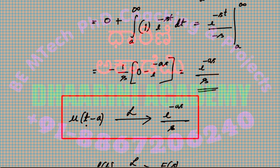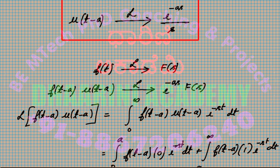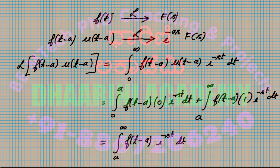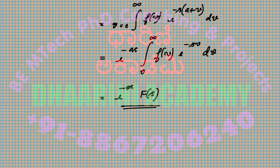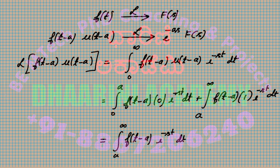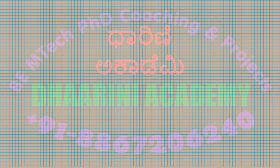To summarize: the first function is just u(t minus a). If you multiply f(t minus a) by u(t minus a), the Laplace becomes e^(minus as) times F(s). Now let's apply this property and solve some problems.